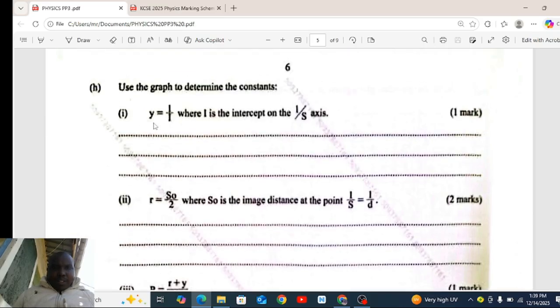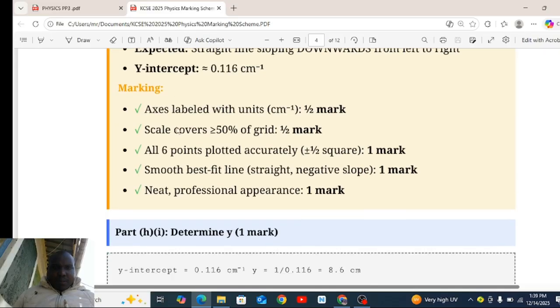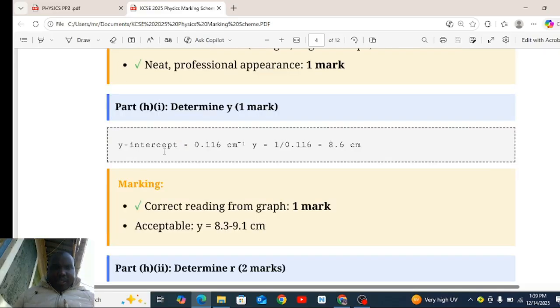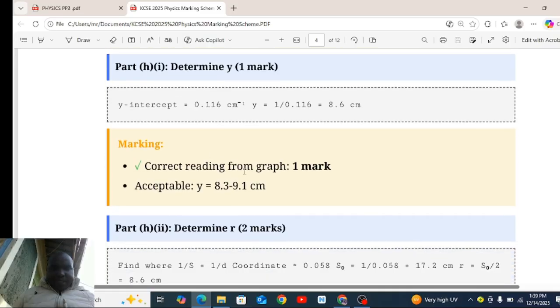Use a graph to determine y. Y-intercept equal to 0.14, you get a reciprocal of that, you get 8.6 centimeters. Correct reading from the graph. Accept y is equal to 8.3 to 9.1. That is the range.